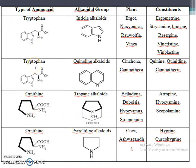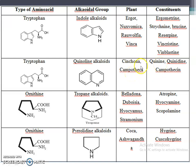The second type of true alkaloid is quinoline alkaloid. The difference from indole is that indole has a five-membered pyrrole ring, while quinoline has a six-membered ring with one extra carbon added. Because of this structural similarity, quinoline alkaloids are also obtained from tryptophan. The example is cinchona and camptotheca. Phytochemical constituents present in cinchona are quinine, quinidine, and camptothecin.